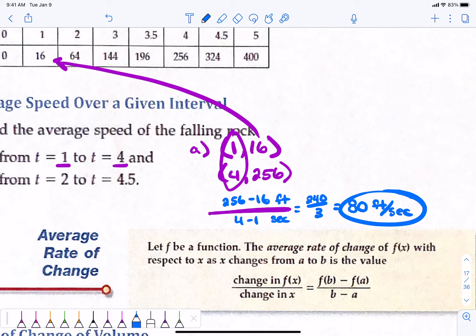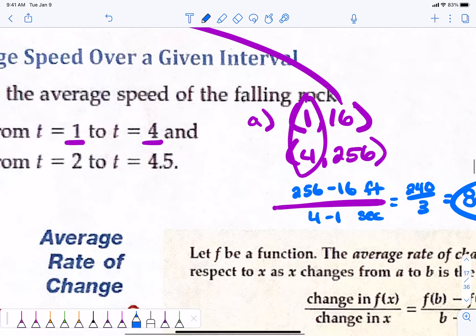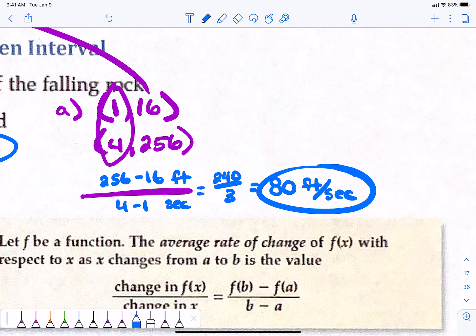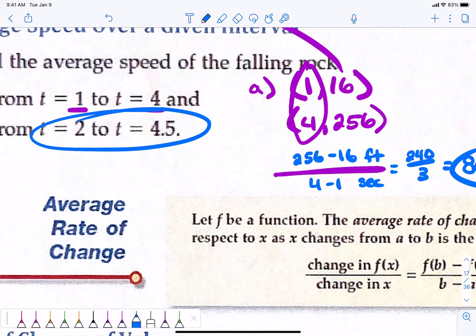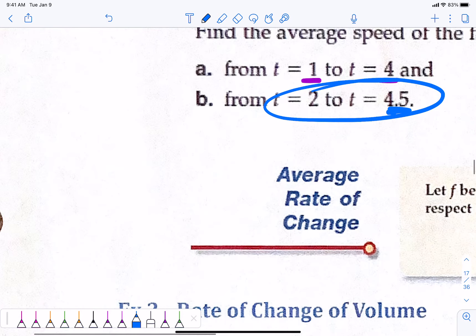Now, you guys hopefully know this, right? The longer an object has been falling, the faster it starts to go. The longer it's been falling, the more it's picked up speed. So, in this one, we're going from 2 to 4.5 seconds. What will this number be in relationship to the 80 that we got? I think it'll be bigger because it's been falling longer. It's going to the 4.5 second mark.